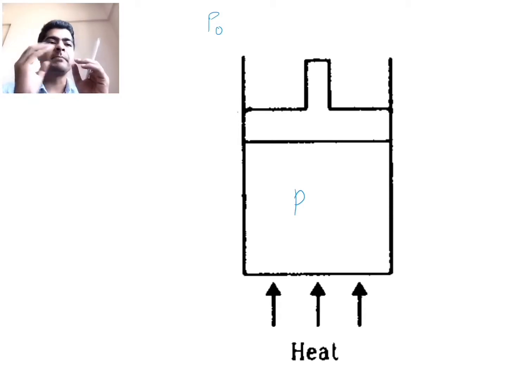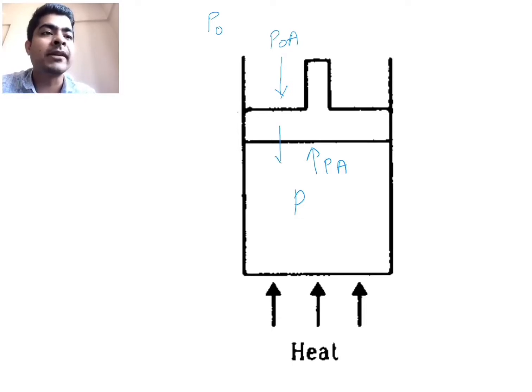So outside pressure is P0, inside pressure is P. And what is P equal to in this case? So right now, ignore the heat, assume no process right now. Let's look at the free body diagram of the piston. So from the top, force acting on the piston is P0 into area. From the bottom, force acting on the piston is P into area.